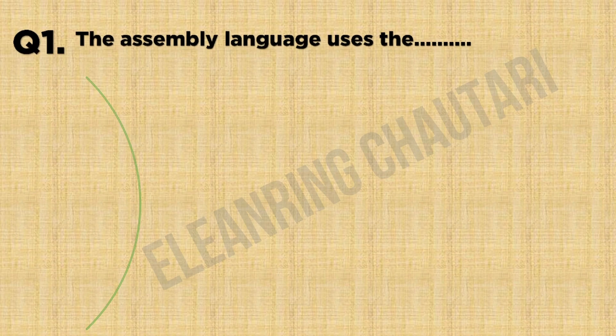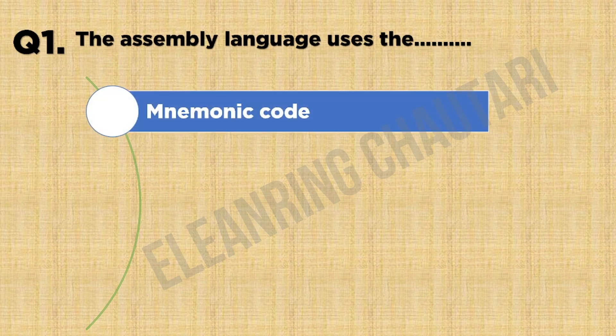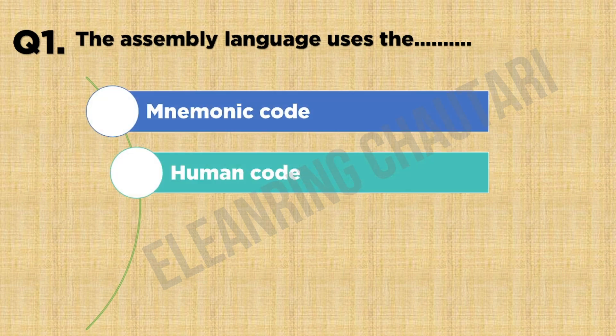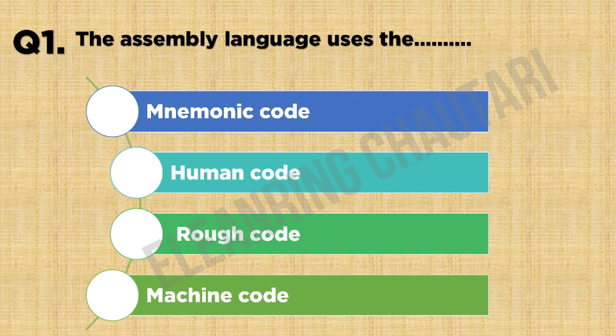Question 1. As a mid-language, we'll show you how to play this video. Option A: Minimum Quote. Option B: Inman Quote. Option B. Option B.